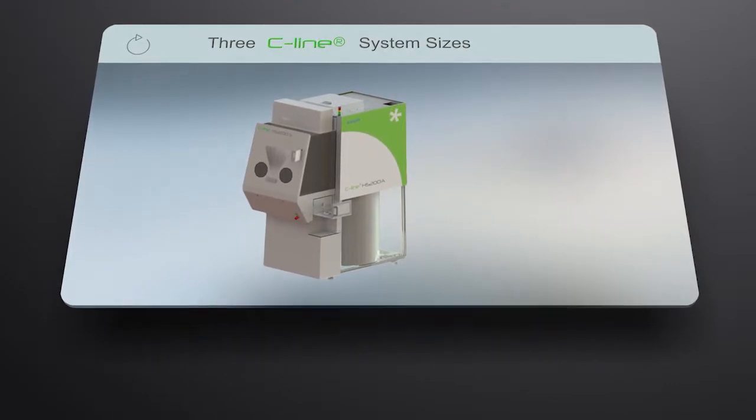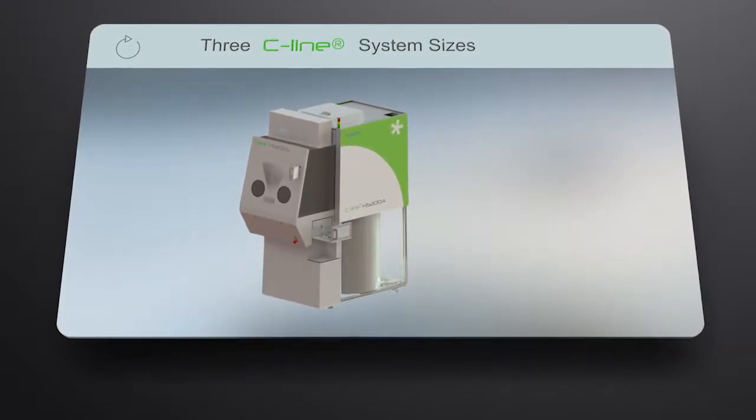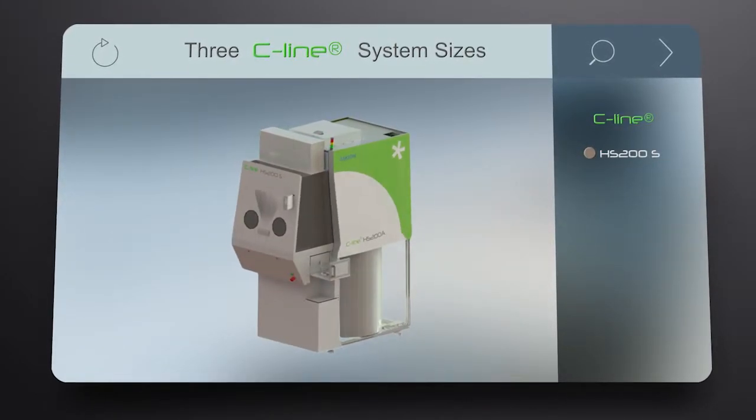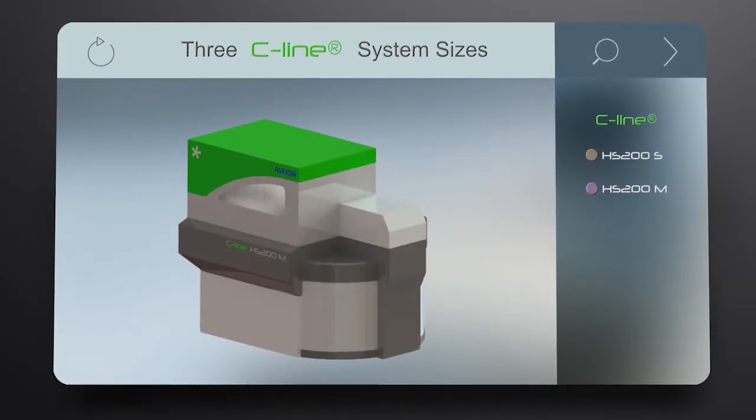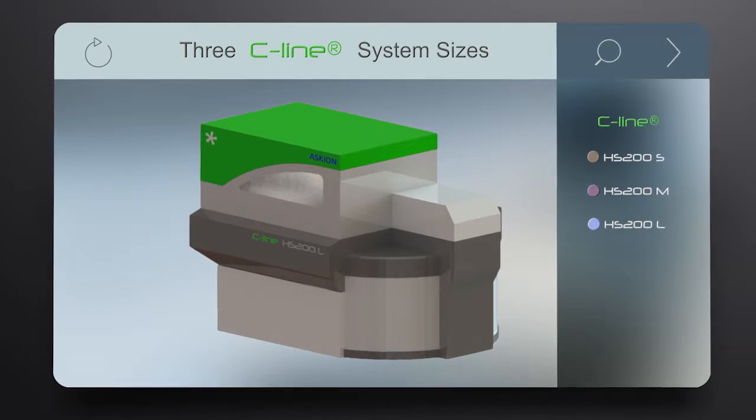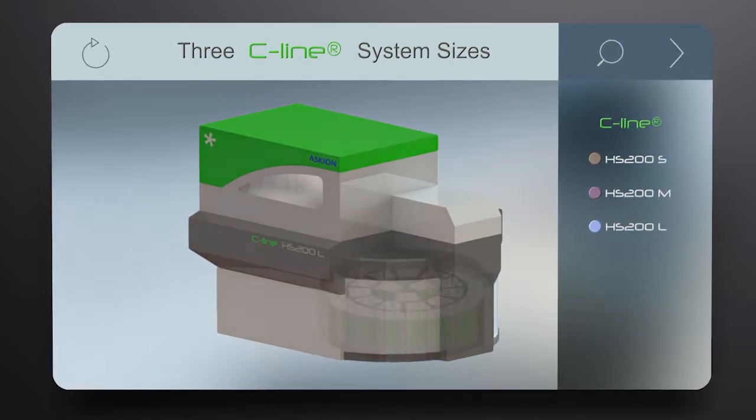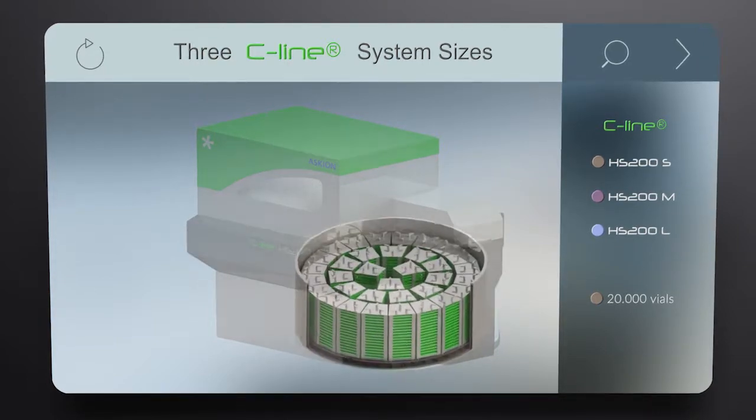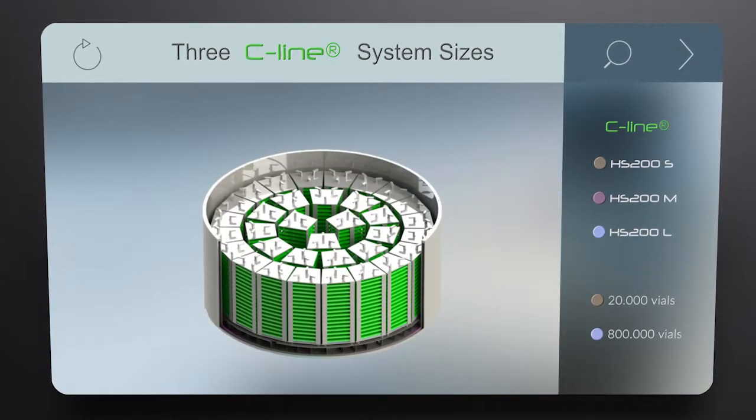The HS200 Ascheon C-Line Hermetic Storage System is available in three sizes: small, medium, and large. Depending on the sample format, the storage capacity can house between 20 and 800,000 vials in each storage unit.